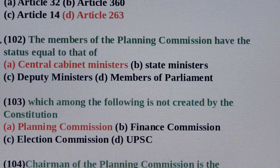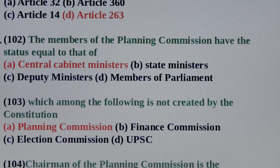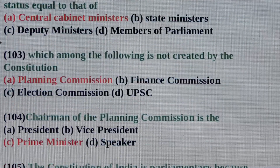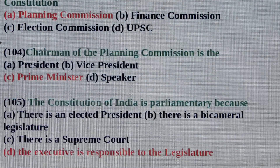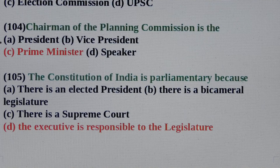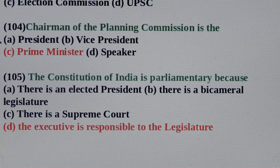Question No. 103: Which among the following is not created by the constitution? Answer is Option A: Planning commission. Question No. 104: Chairman of the planning commission is the? Answer is Option C: Prime Minister. Question No. 105: The constitution of India is parliamentary because? Answer is Option D: The executive is responsible to the legislature.